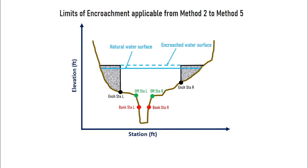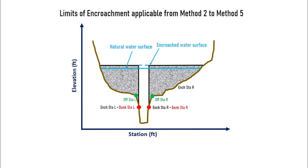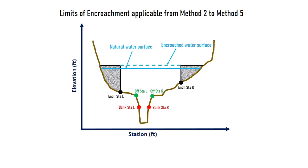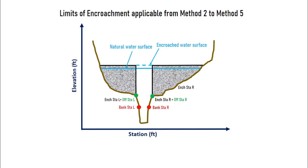In all of these methods, there is a condition that if the calculated encroachment stations cross the bank station, the iteration will stop and the bank station will be set as the final encroachment station. There is one more term known as offset station. If somebody wants to leave a margin on both banks, they can do so using the offset station. Now the iteration will stop at the offset station instead of the bank station. This concept does not apply to method 1 because there we are defining the stations by our own.